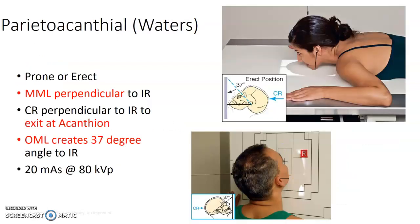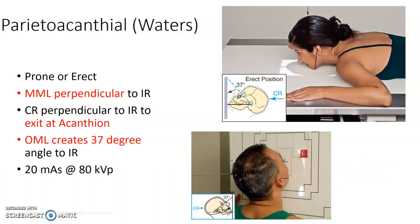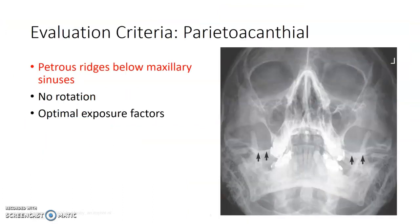For the Waters projection, you know it now — it's the same. The patient can be prone or erect, but the MML is perpendicular to the IR, so you're getting that chin and EAM on the same plane. The central ray exits at the acanthion, and the OML creates a 37-degree angle to the IR. Same kind of MAS and KVP. On the Waters, we want the petrous ridges below the maxillary sinuses.